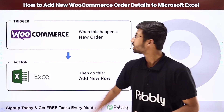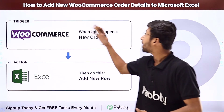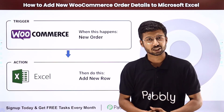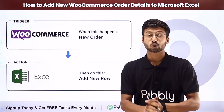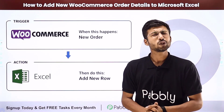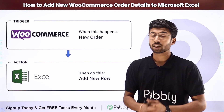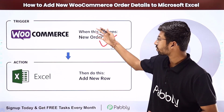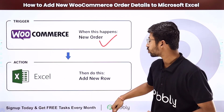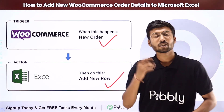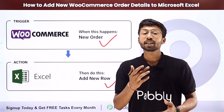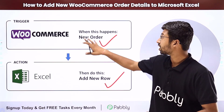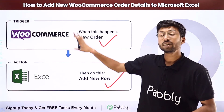In this video, we will discuss how to add new WooCommerce order details in Microsoft Excel. Suppose you are a WooCommerce store owner and you want, whenever you receive a new order in your WooCommerce store, to add the details of that new order into your Microsoft Excel spreadsheet. You can completely automate this process, and the trigger of this automation will be receiving a new order in WooCommerce.